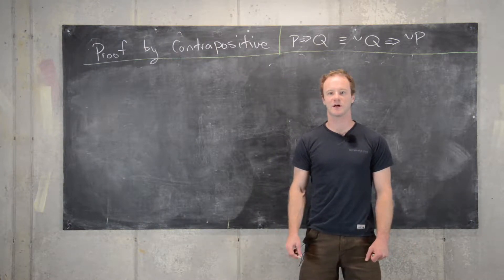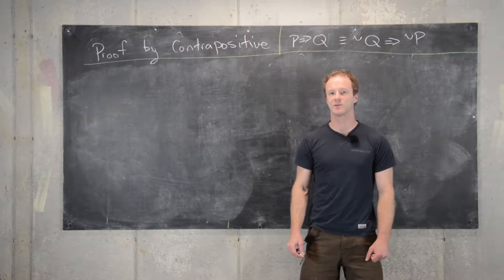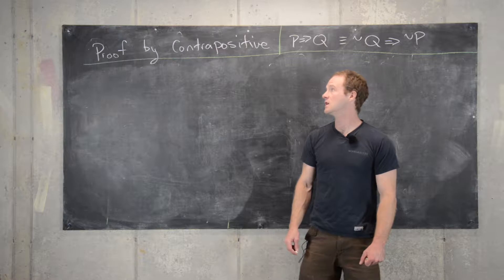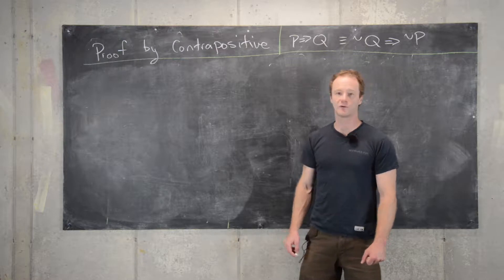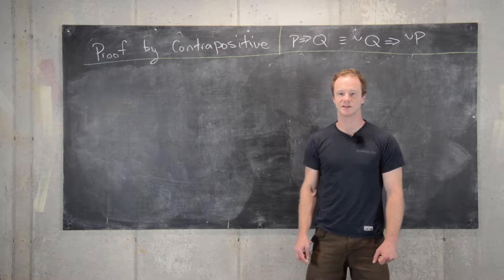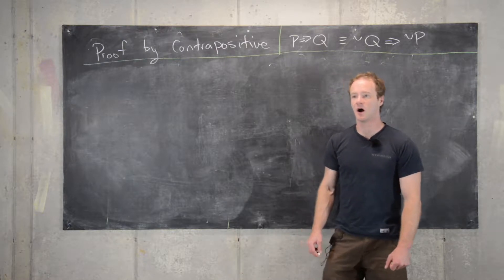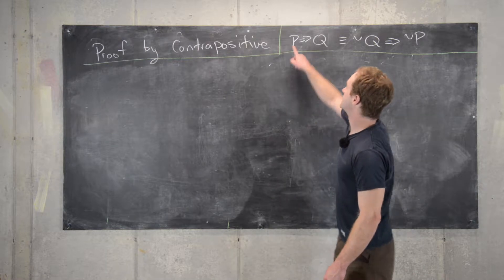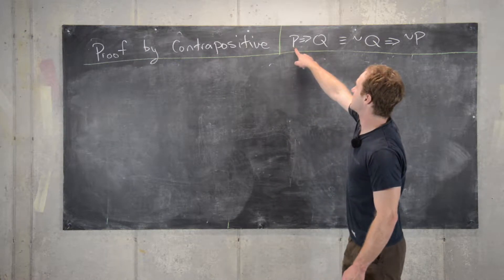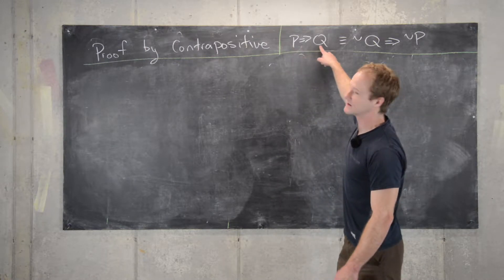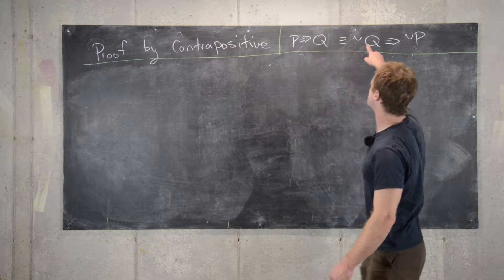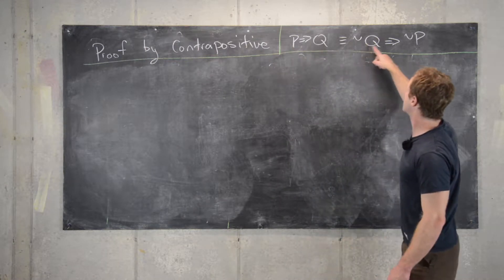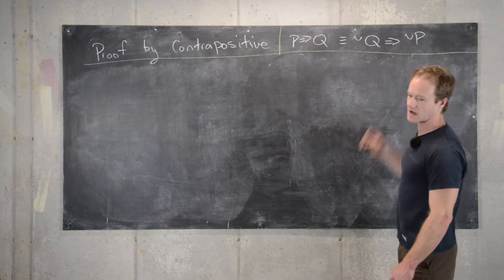Here we're going to look at an example of a statement that we prove using the method of proof by contrapositive. This relies on the logical equivalence between the statement p implies q and the statement not q implies not p.